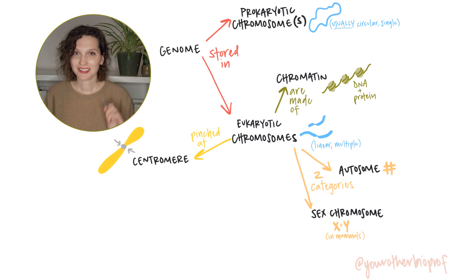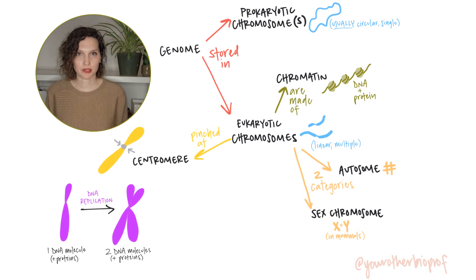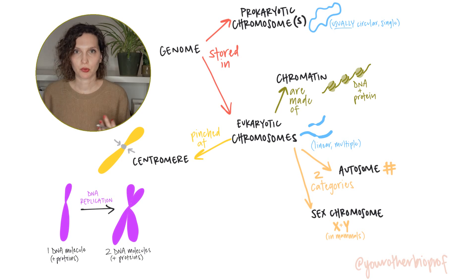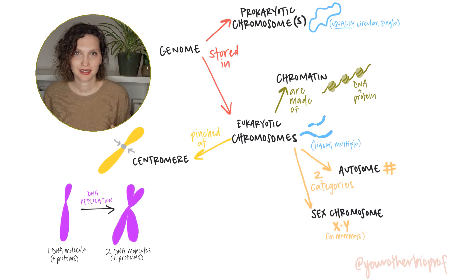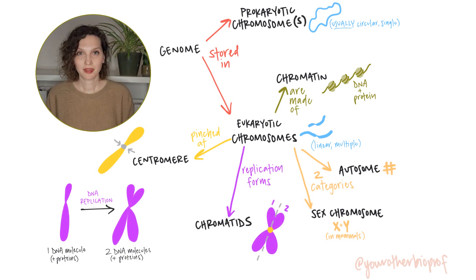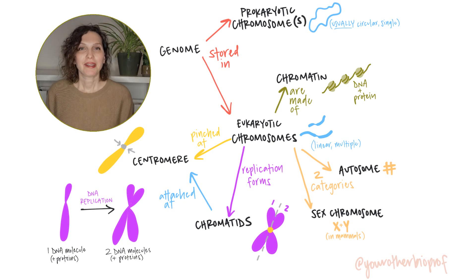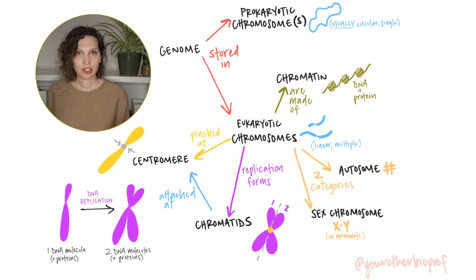Before cells divide, the DNA will replicate. That DNA replication changes the shape of the chromosome, so instead of our stick-like structures, now we'll have X-shaped chromosomes — replicated chromosomes that consist of two molecules of DNA. Each half of our replicated chromosome consists of one DNA molecule and is called a chromatid. These are attached to each other at the centromere. Because the two chromatids on a single replicated chromosome are identical, we refer to them as sister chromatids.